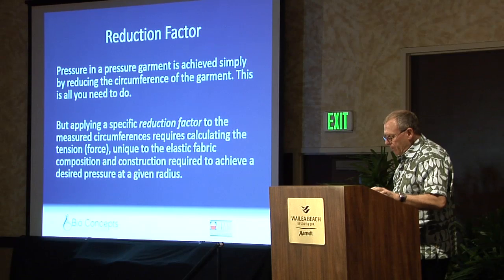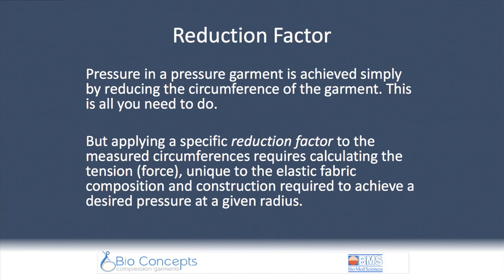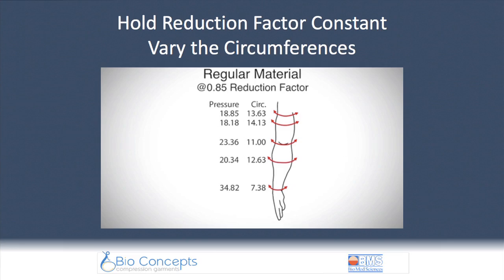At Bioconcepts, we are of the opinion that most custom pressure garments worldwide are made by sewing the garments some set amount smaller than the circumference is measured, and that little or no attempt is actually made to calculate the pressures that would be affected at any given circumference. We do not actually do it that way. The fabric we happen to call regular material is a nylon spandex recommended for adult patients, extremely similar to many other spandex fabrics used by other manufacturers — commonly used in brassiere manufacture, swimsuits, and lots of other things.